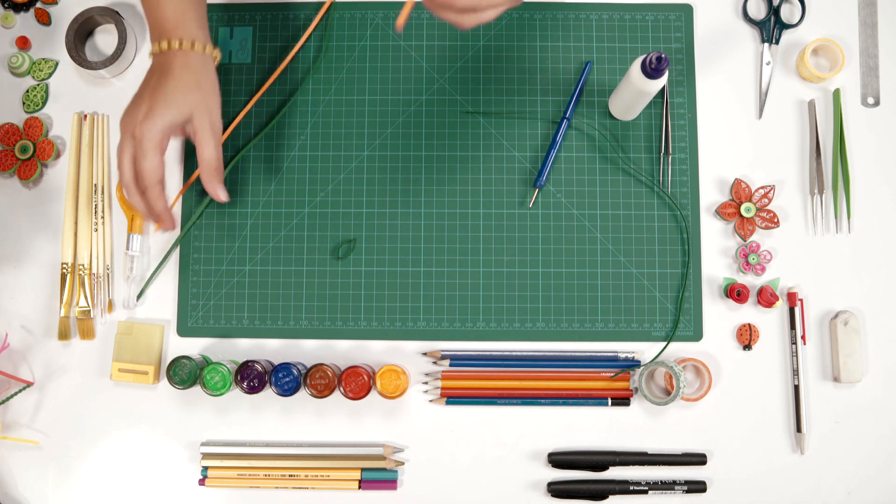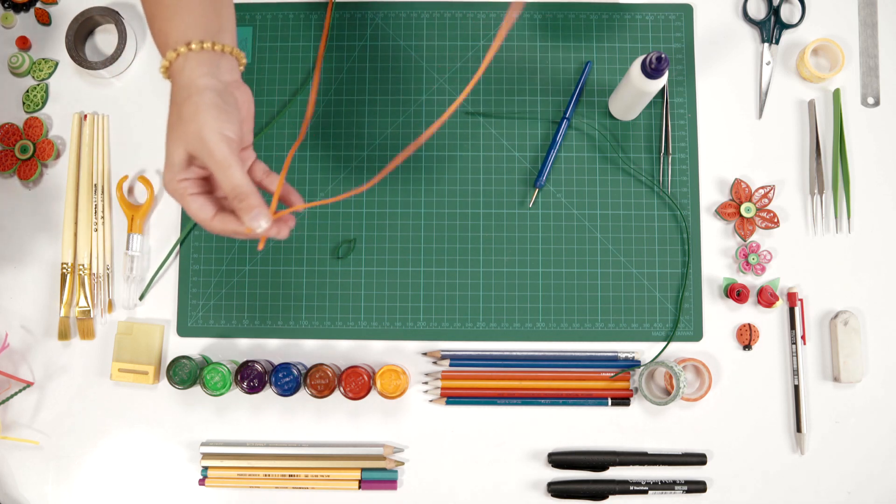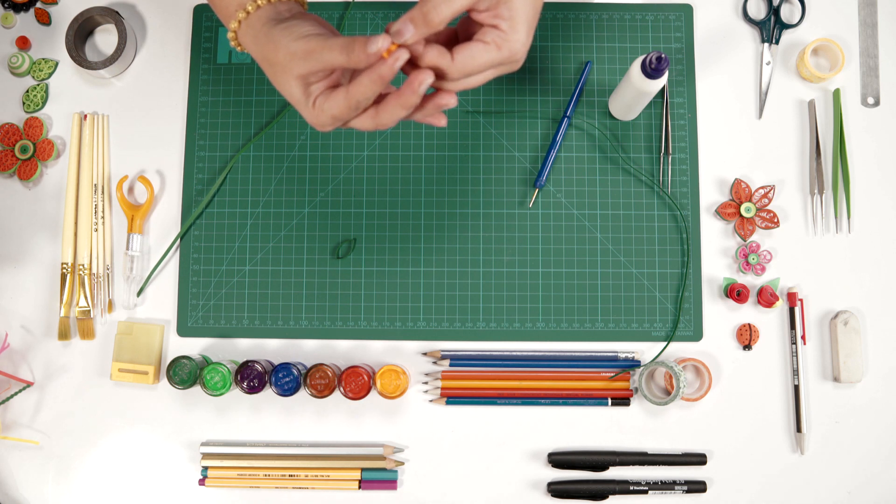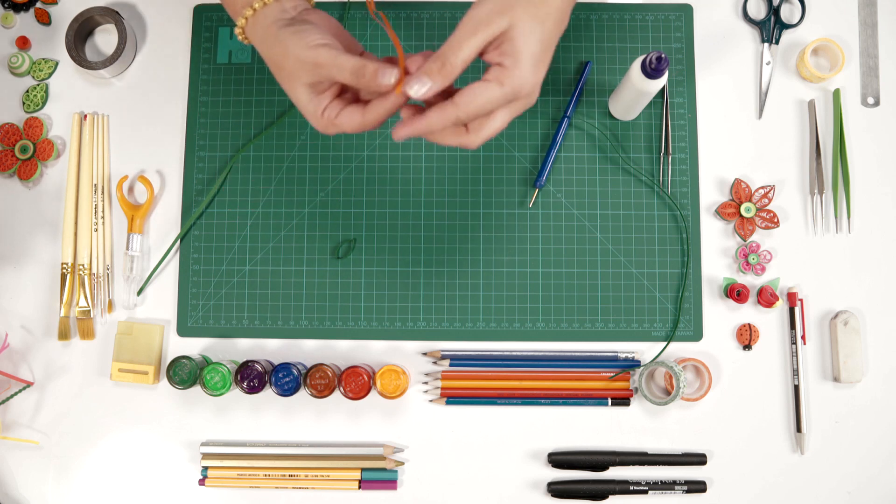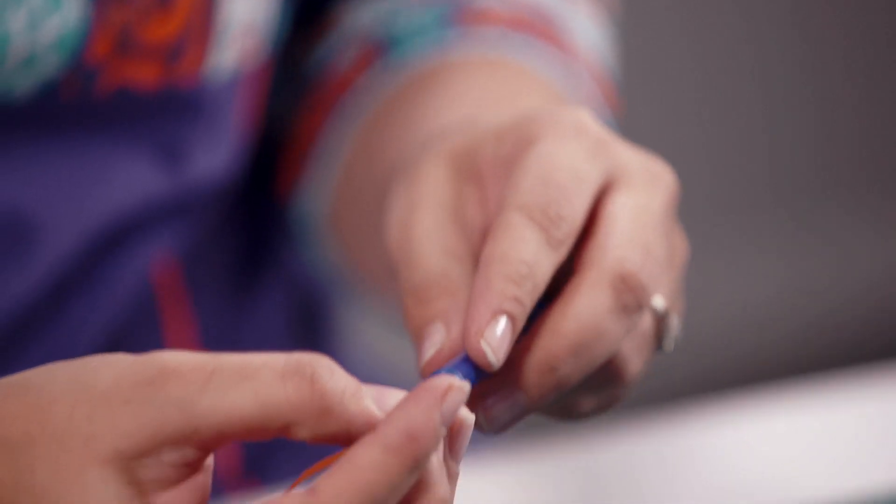Now for that, this beehive quilling style looks better when it's more dense. So for that we are using 2 strips of paper instead of 1 and you start quilling.